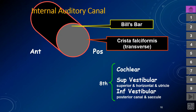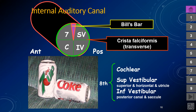Looking into the internal auditory canal from the cerebellopontine angle cistern, it is divided into four quadrants by Bill's bar and the horizontal transverse crista falciformis. In the anterior superior quadrant is the facial seventh nerve; in the anterior inferior portion is the cochlear eighth nerve; and in the posterior half are the superior and inferior divisions of the vestibular nerve. You can remember this by thinking of '7-up and Coke-down' for the anterior half of the IAC, and the posterior half contains the superior and inferior vestibular nerve, one right over the other.